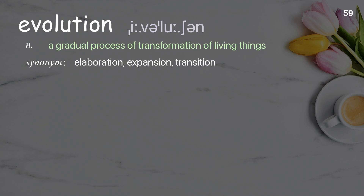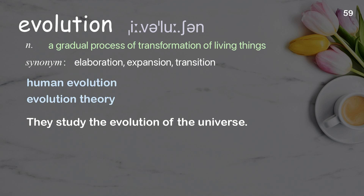Evolution: a gradual process of transformation of living things. Examples: human evolution, evolution theory. They study the evolution of the universe.